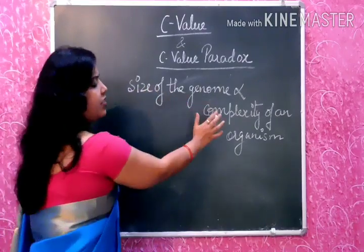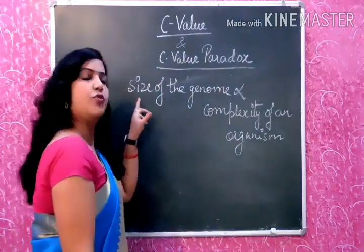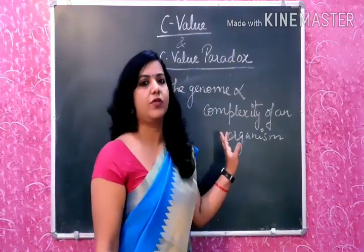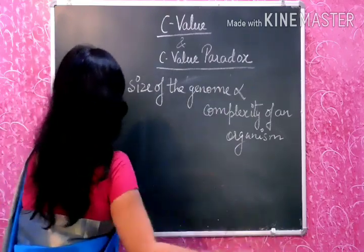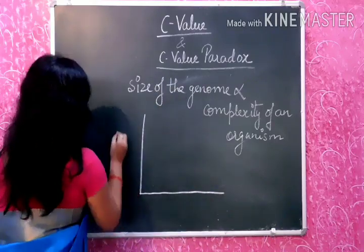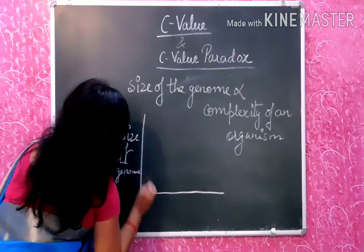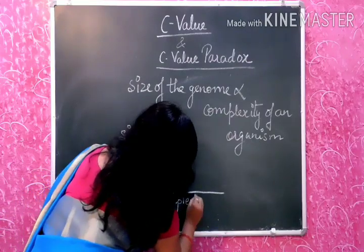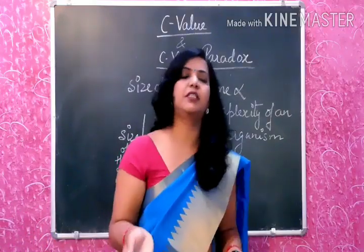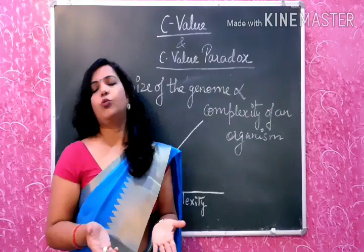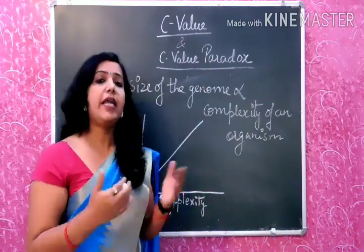In other words, complexity of an organism can be predicted by knowing the size of the genome, or size of the genome can be predicted by knowing the complexity of an organism. The graph shows that as complexity increases, genome size also increases. For example, if we compare, an elephant has a larger genome as compared to human beings.